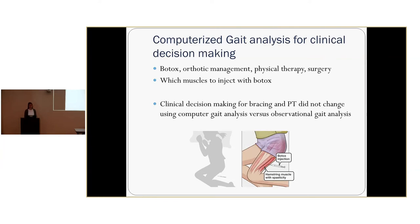Computerized gait analysis can help to guide Botox injection decisions, possibly orthotic management, referral to physical therapy, and even surgery — specifically which muscles are best to inject with Botox to make gait more efficient. However, this study showed that clinical decision-making for bracing or referral to physical therapy didn't change with computer gait analysis versus observational gait analysis, which is important for PTs who don't have computerized gait analysis available. So observational gait analysis is valuable for making bracing decisions or guiding your overall plan of care.